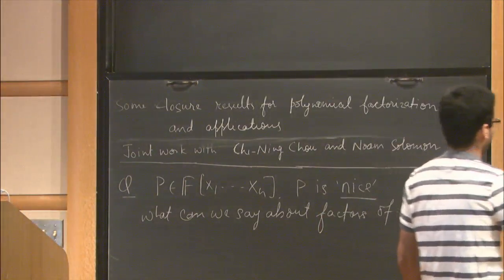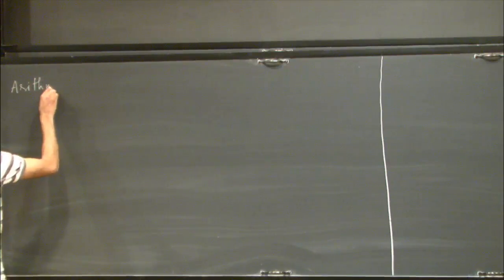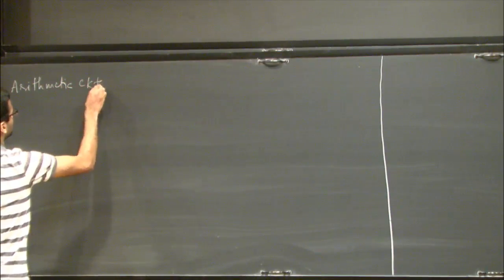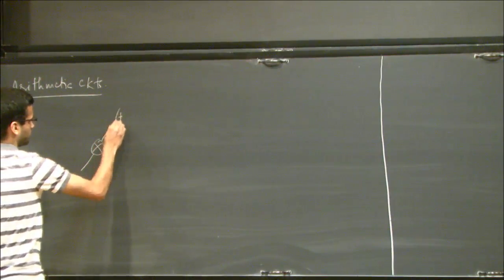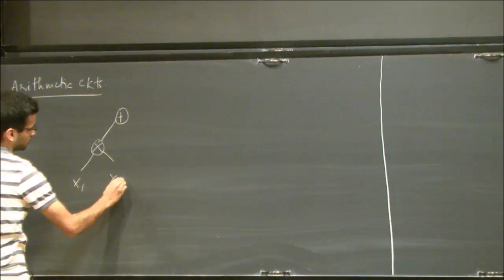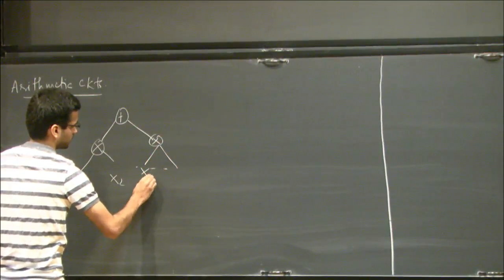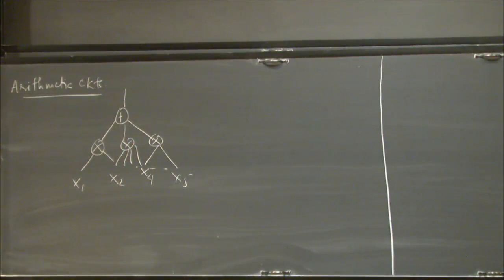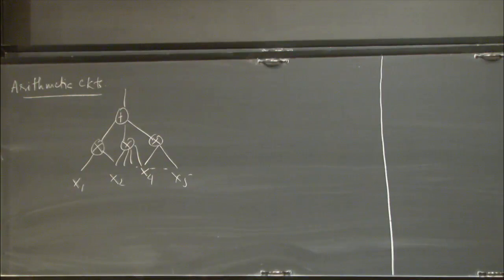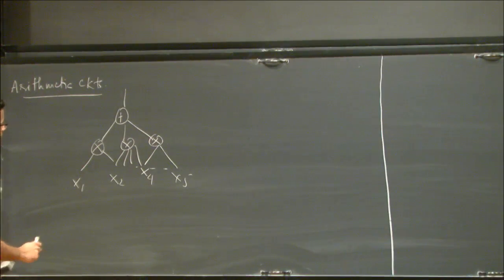To make this formal, let me start by defining arithmetic circuits. An arithmetic circuit is a directed acyclic graph — it's like a Boolean circuit, except we do arithmetic over the polynomial ring. They give you natural succinct ways of representing multivariate polynomials, which if you want to write them as sums of monomials, you'd have to write a lot of stuff. If you like Boolean circuits, you could think of this as the algebraic analog of Boolean circuits.